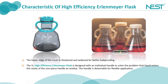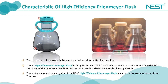The cover of the Nest flask can be screwed or unscrewed smoothly. The lower edge of the cover is thickened and widened for better leak-proofing. The 5-liter high efficiency Erlenmeyer flask is designed with an individual handle to solve the problem of liquid entering the cavity of a one-piece handle as residue; the handle is detachable for flexible application. The bottom area and opening size of the Nest high efficiency Erlenmeyer flasks are exactly the same as those of Thompson ones, so a lot of verification work can be reduced and even a seamless replacement is possible.